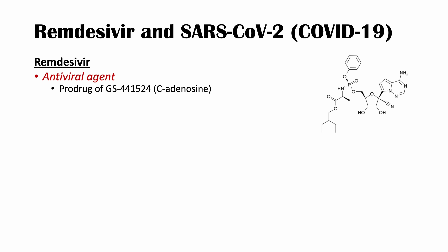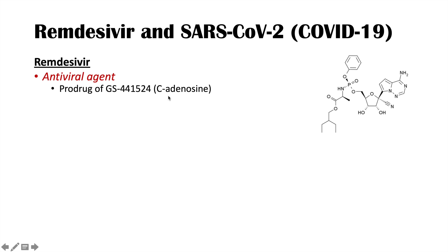Adenosine is a nucleoside base — a nucleotide base without a phosphate group. These are the building blocks used to create nucleic acids like RNA and DNA. An analog is essentially a mimic — it looks like the real thing but is not. GS441524 looks like adenosine but is not the same as true adenosine.